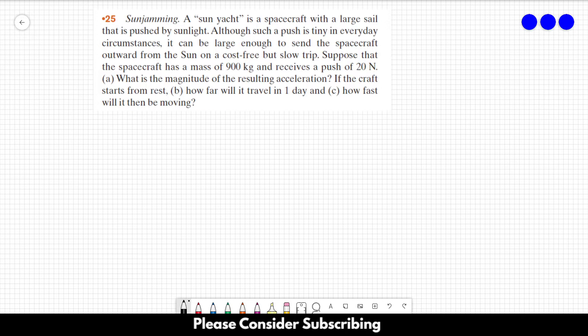Number 25. A sun yacht is a spacecraft with a large sail that is pushed by sunlight. Although such a push is tiny in everyday circumstances, it can be large enough to send the spacecraft outward from the sun on a cost-free but slow trip.